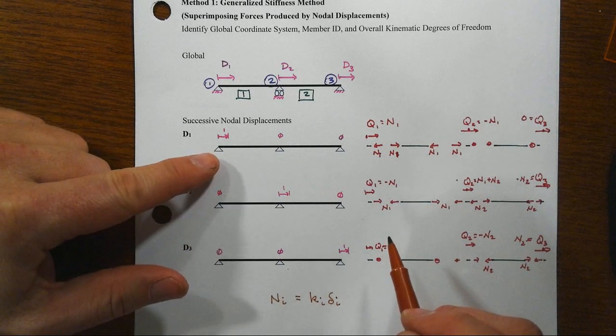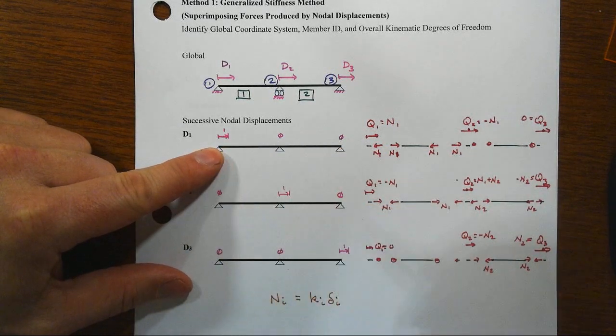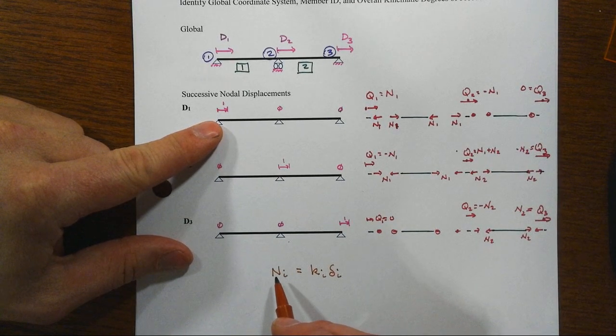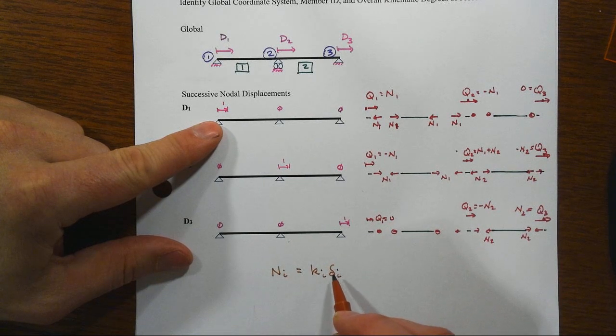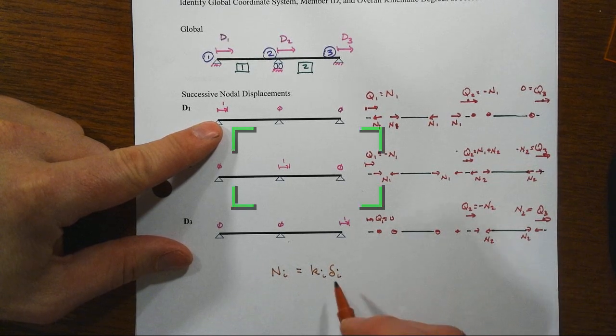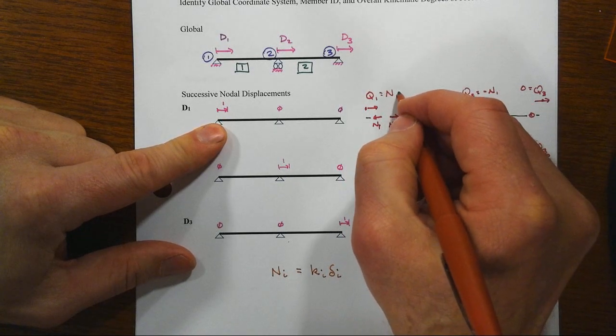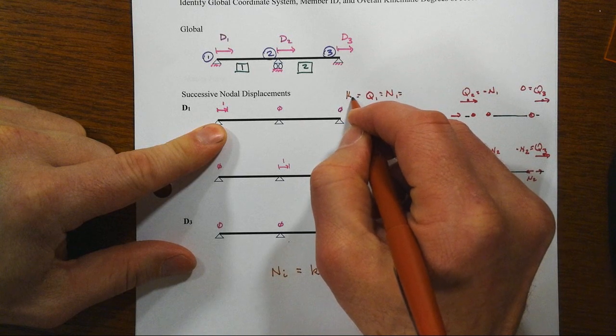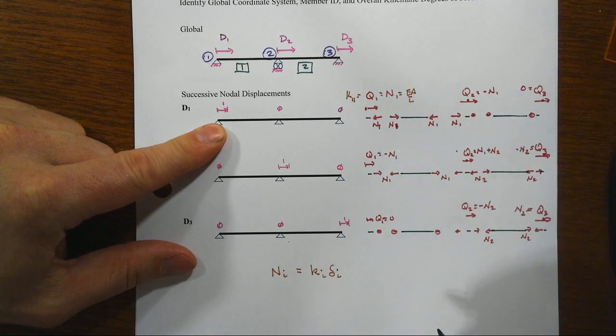Note here that in the special displacement pattern of 100, when we go look at then our force displacement relationship, which is the axial force equals the spring constant times the deformation of the member, so that's EA over L of the member times then the deformation of the member. Well, that's a 1 in this case. So we end up with that globally K11 is equal to EA over L.